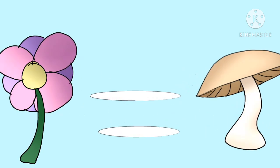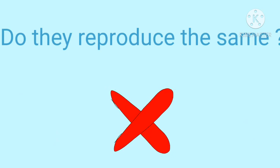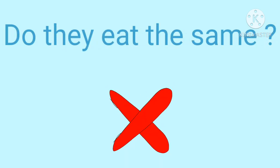Even though fungi are like plants, they still have a few differences. They do not reproduce the same. Plants reproduce by seeds, but on the other hand, fungi reproduce by spores. They do not eat the same. Plants can make their own food, but fungi do not have this ability. Instead, they get their energy from the food they take in.